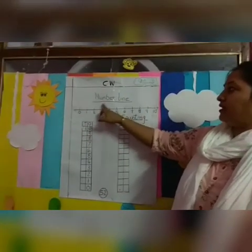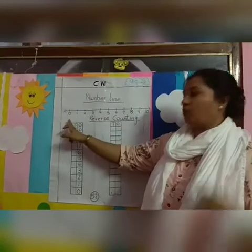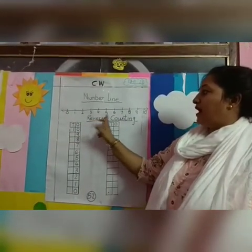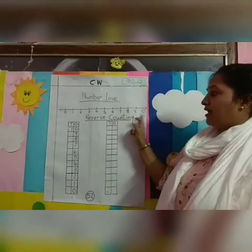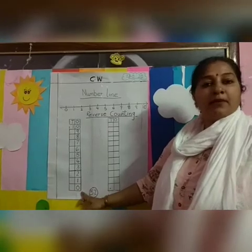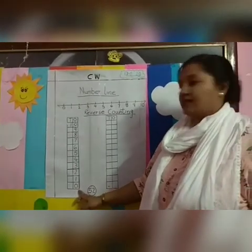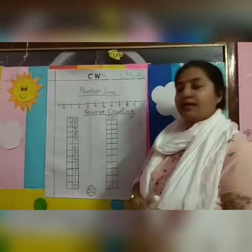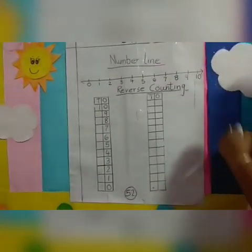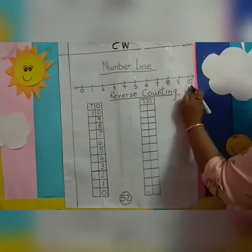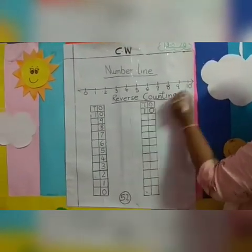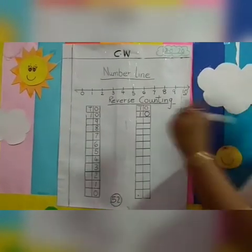See children, this is the number line, and as I've shown you earlier: 0, 1, 2, 3, 4, 5, 6, 7, 8, 9, 10. So today we will write numbers in reverse. How we will write? Let's start. We will start writing from here — that means we will start from number 10. We will write number 10.